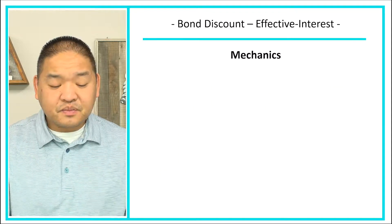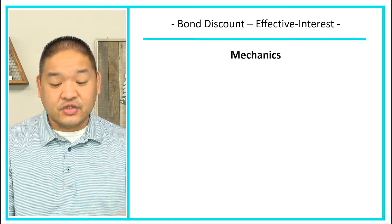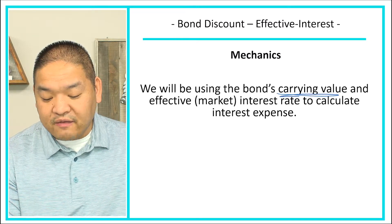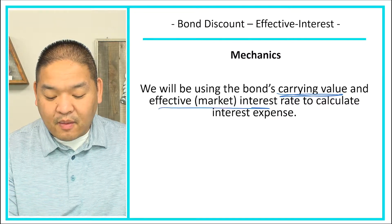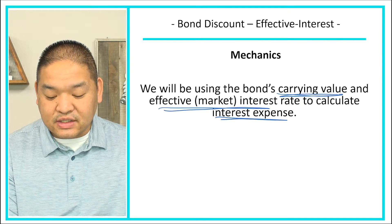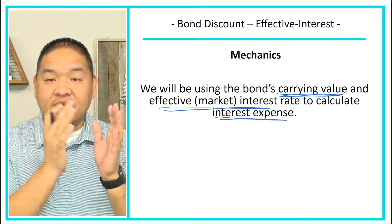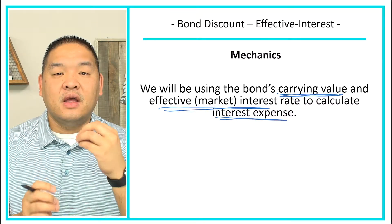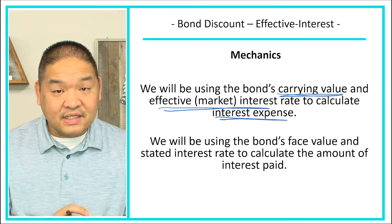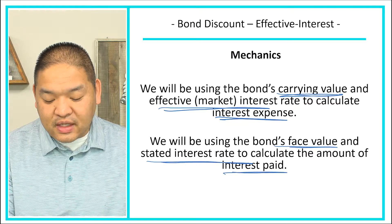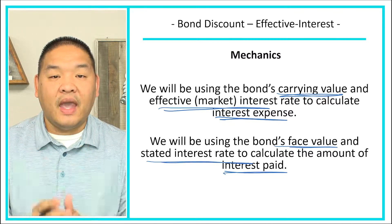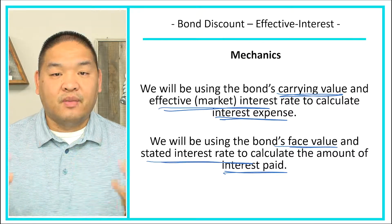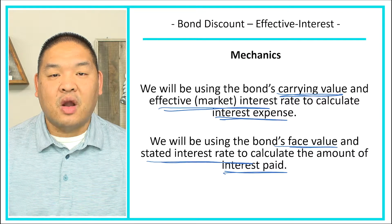Some mechanics to understand: we will use the bond's carrying value and the effective market interest rate to calculate the interest expense. To calculate interest expense, we need the carrying value of the bond and the market interest rate at the time we issued the bonds. We also need the bond's face value and the stated interest rate to get the amount of interest we are paying to our bondholders.